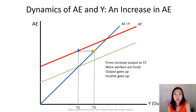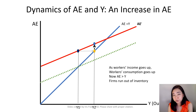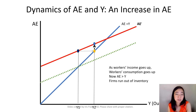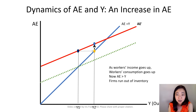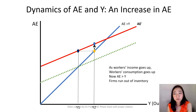These workers are also consumers. After workers' income increases, they'll go ahead and increase their consumption. Therefore, consumption goes up, meaning aggregate expenditure is going to go up. So we're moving from the yellow point to the navy blue point.